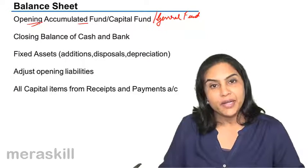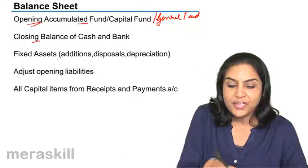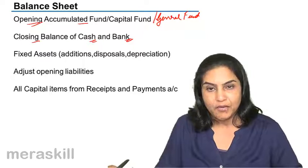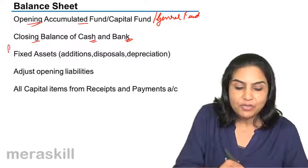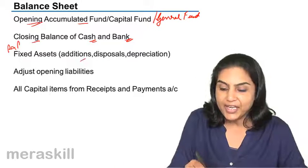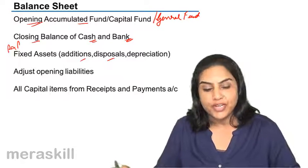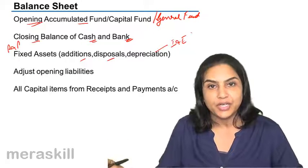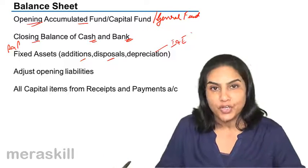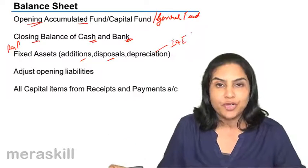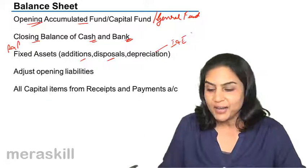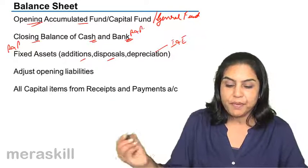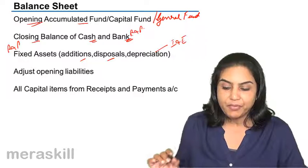We have already made the receipts and payments account, from where we get the closing balance of cash and bank. From the receipts and payments account, we also know the fixed assets — additions and disposals. Depreciation, we know from the income and expenditure account as per the rules of the organization; depreciation would have been charged and recorded there. The closing balance of cash and bank comes from the receipts and payments.